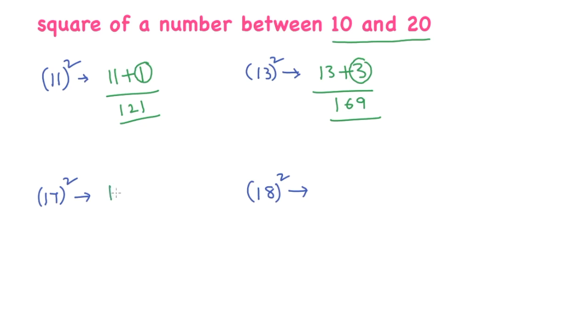17 square. I'll write it as 17 plus 7. Here, you have to observe one small technique. 7 square is 49. As 49 is a two-digit number, I'll write like this 49.